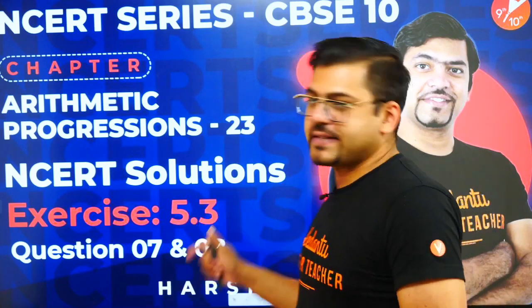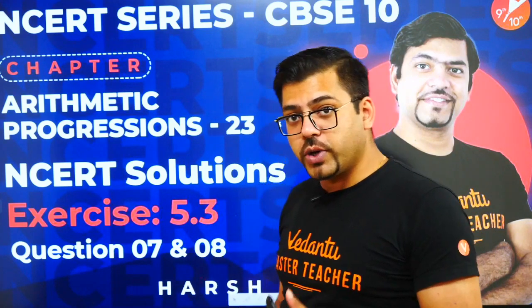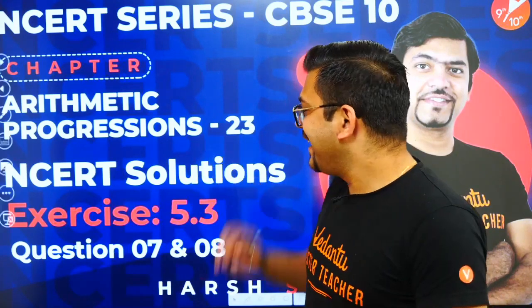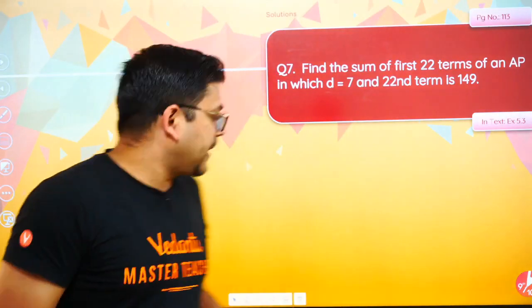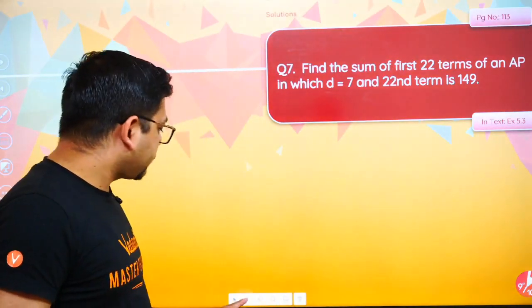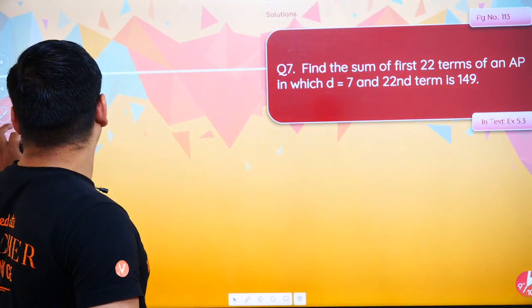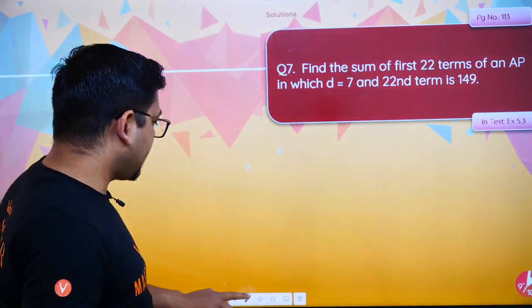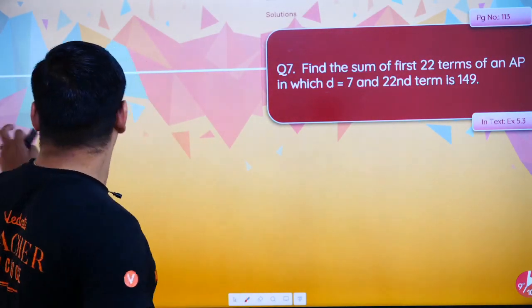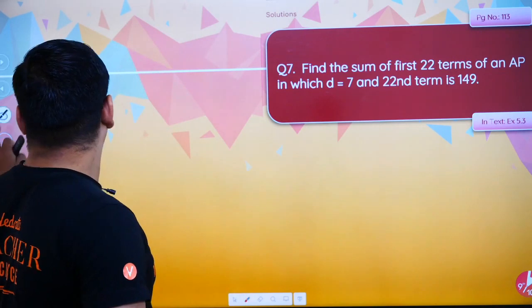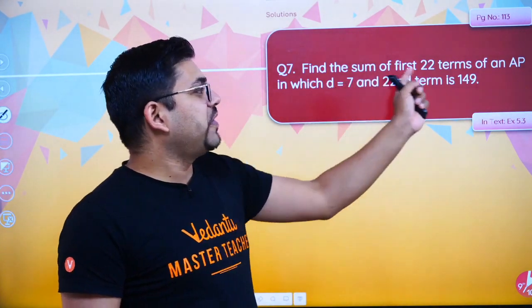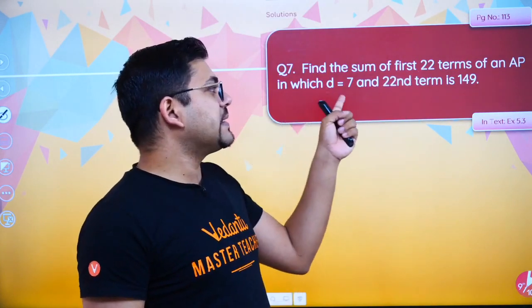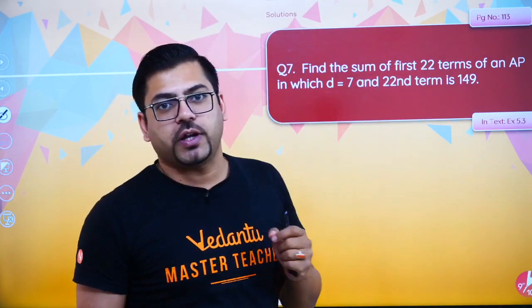Today we will continue Exercise 5.3, and we are going to do Q7 and Q8. Let's start. The question is in front of you — look at it. The question says: find the sum of first 22 terms of an AP in which d is 7 and the 22nd term is 149.